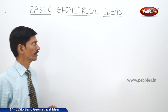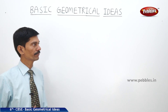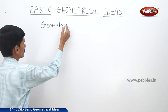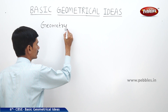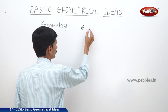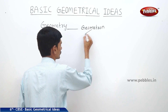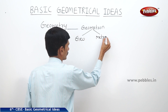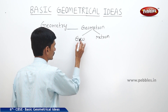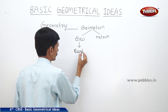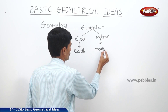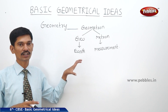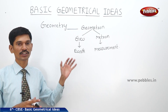Let us start the next chapter: Basic Geometrical Ideas. The English word 'geometry' is derived from the Greek word 'geometron', which is obtained from two words — 'Geo' meaning earth, and 'metron' meaning measurement. So geometry was widely used to measure lands in ancient days.